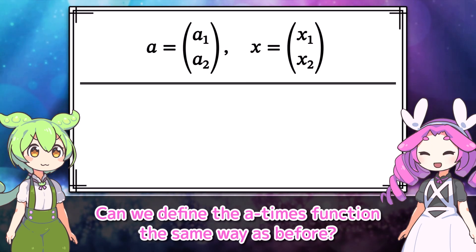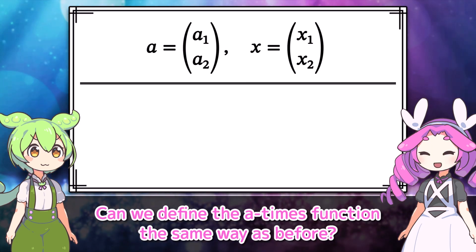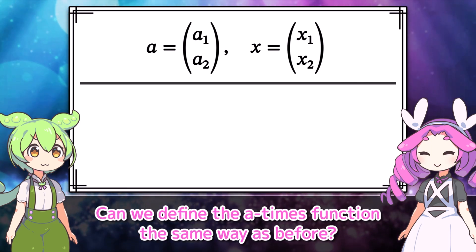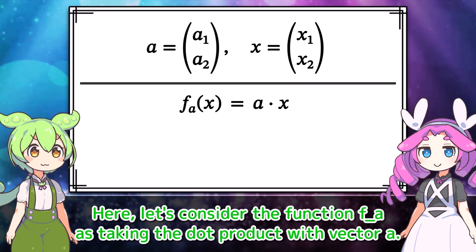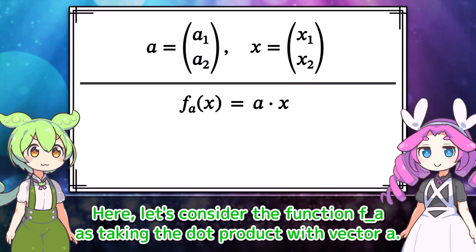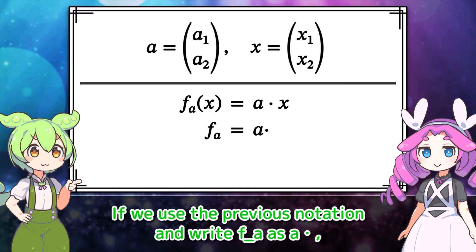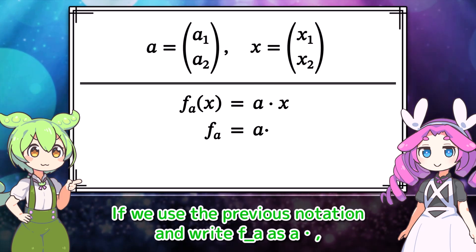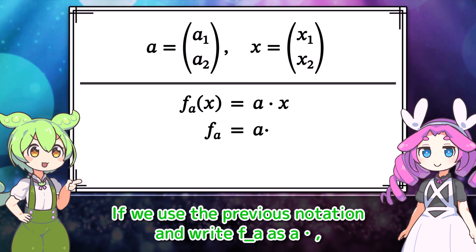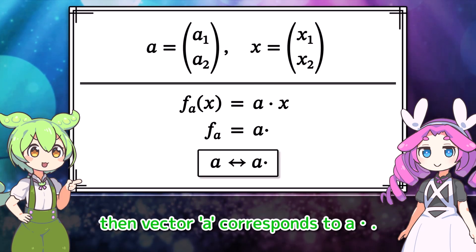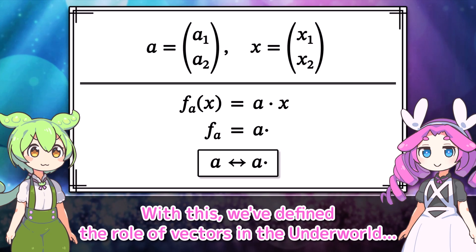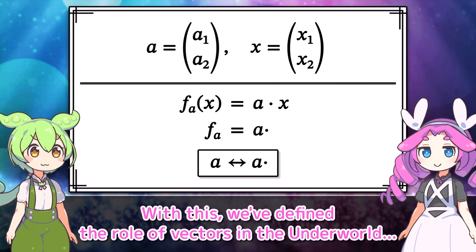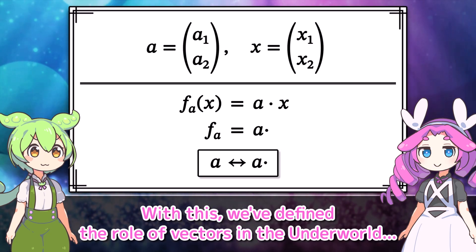Do we define the a times function the same way as before? Let's consider the function f sub a as taking the dot product with vector a. If we use the previous notation and write f sub a as a·dot, then vector a corresponds to a·dot. With this, we've defined the role of vectors in the underworld.